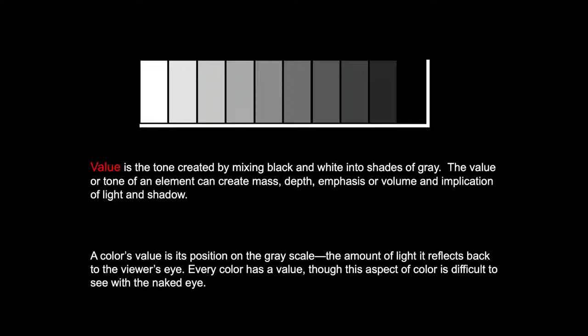Value is the tone created by mixing black and white into shades of gray. The value of an element can create mass, depth, emphasis, and volume, and can imply light or shade. A color's value is simply its position on the grayscale — the amount of light it reflects back to the viewer's eye. Every color has a value, but this aspect is the most difficult to see with the naked eye because we can't turn off the structures in our eye that view color. The rods, which view value, and the cones, which view color, respond to different light levels.